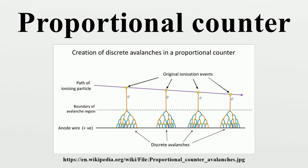The accompanying plot shows a proportional counter operating voltage region for a coaxial cylinder arrangement. In a proportional counter, the fill gas of the chamber is an inert gas which is ionized by incident radiation, and a quench gas to ensure each pulse discharge terminates. A common mixture is 90% argon, 10% methane, known as P10.